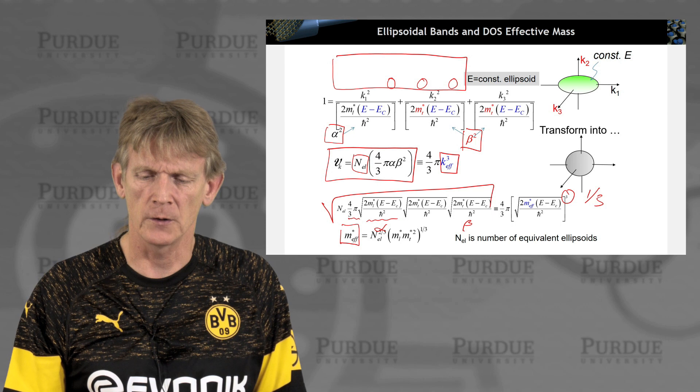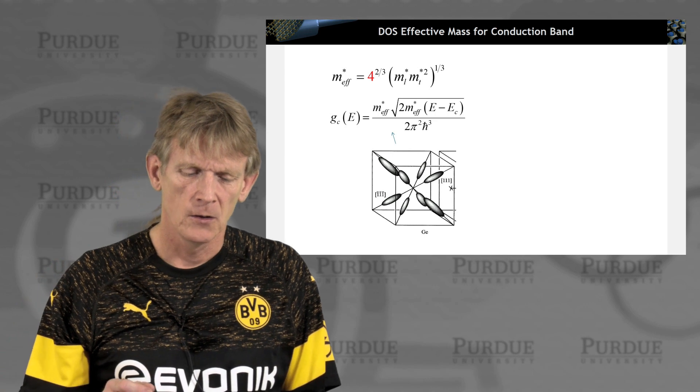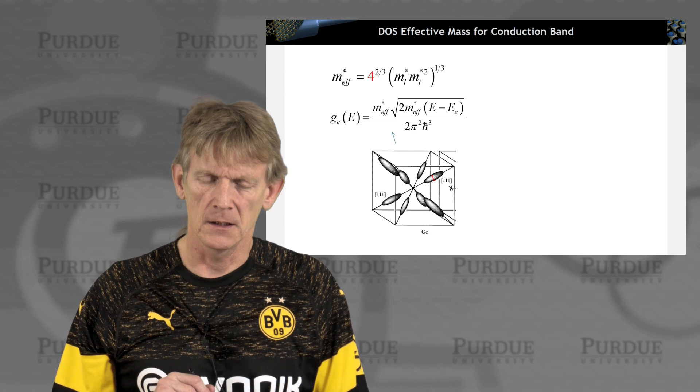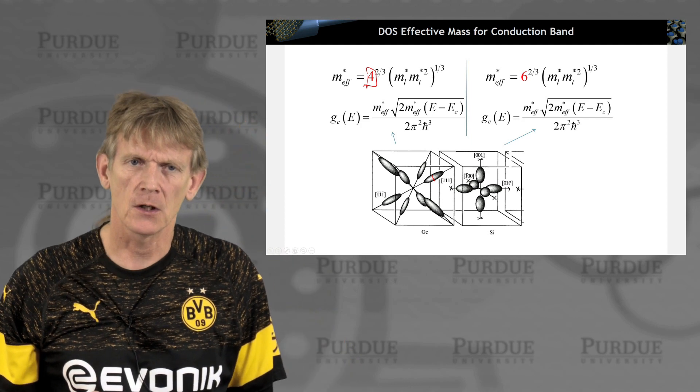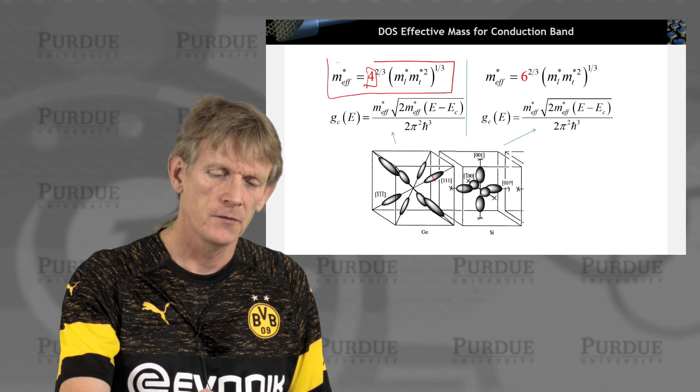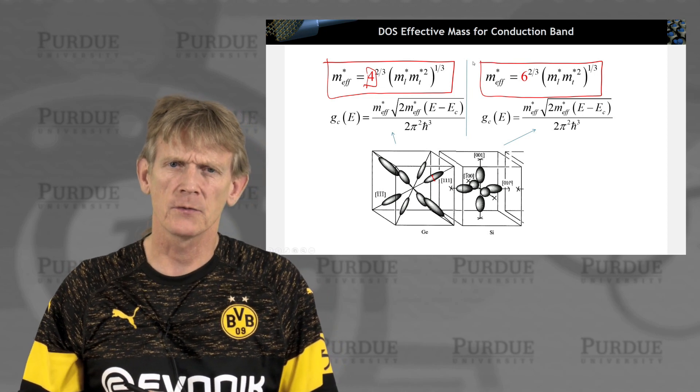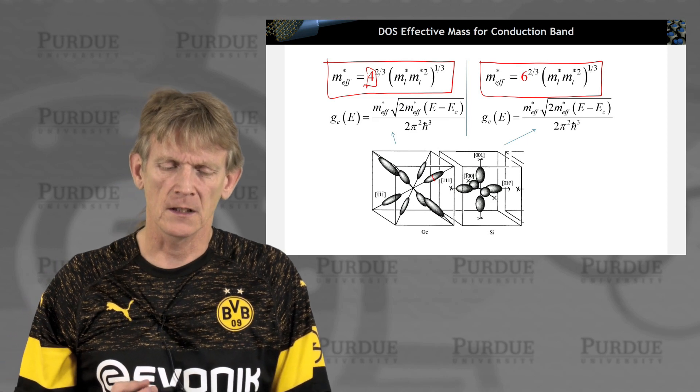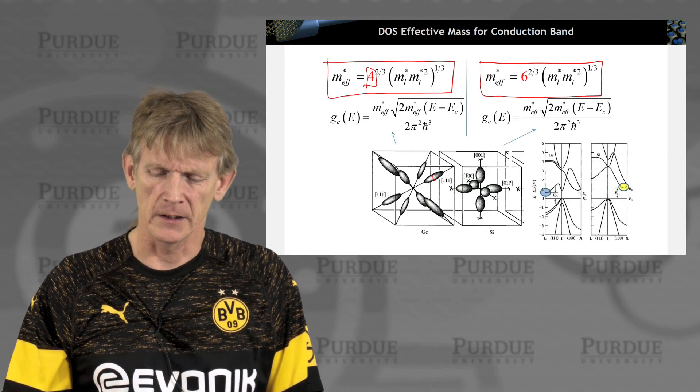But all the states are transformed into a sphere. So for the germanium, we have four of these half ellipsoids. So that's the number four here. For silicon, we have six of those because all six are inside the Brillouin zone. So these are the transformations to get from the ellipsoid masses of the longitudinal and transverse masses, or the heavy electron mass and the light electron mass, into a single density of states effective mass, which allows us to carry forward analytical calculations easier.